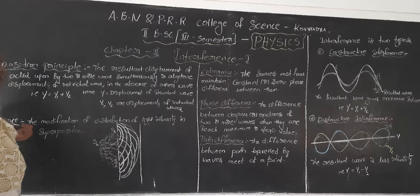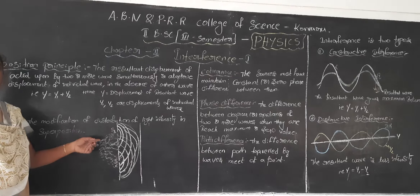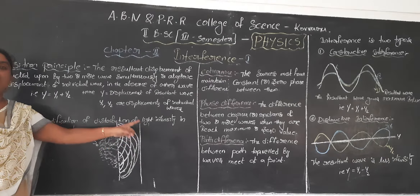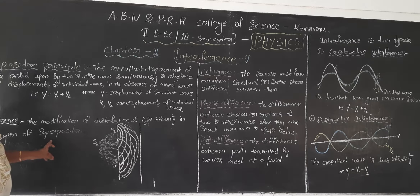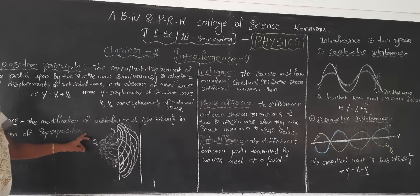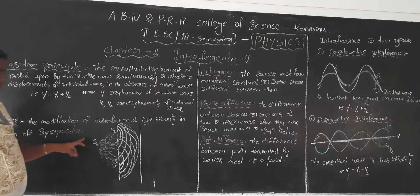Interference is the modification of the distribution of light intensity when two waves undergo superposition. That is, when two waves superpose, the light intensity is modified — this principle is called Interference.